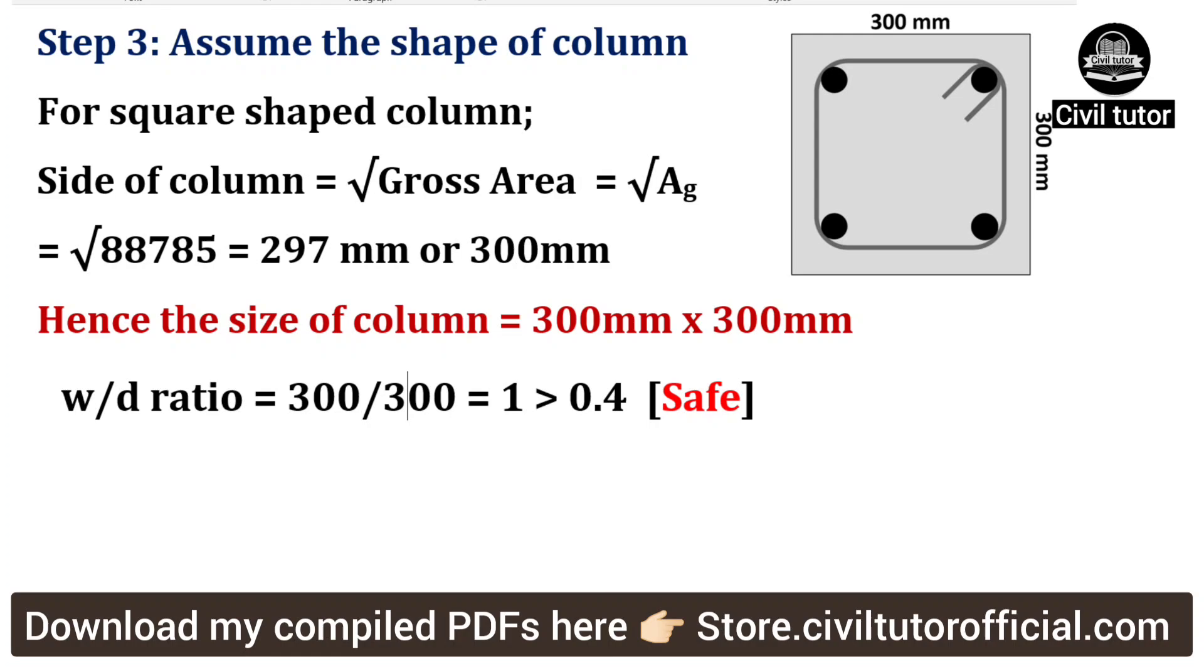The width to depth ratio will be equal to 300 by 300, which will be equal to 1, which is greater than 0.4. Hence, the assumed cross section will be a safe cross section as per the code provision.